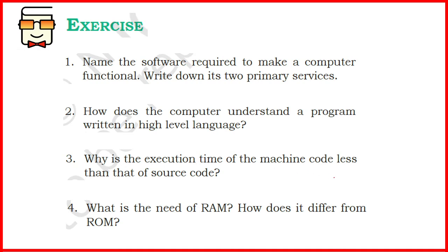The third question: why is the execution time of machine code less than that of the source code? Machine code is closest to the computer system in terms of understandability. It is written in the form of binary digits — zeros and ones — so the computer can directly understand it. On the contrary, source code written in assembly language must be converted using an assembler, or if written in high level language, converted using compilers or interpreters. This conversion takes time, so the execution time of machine code is less because it can be directly executed, whereas source code is first converted and then executed.